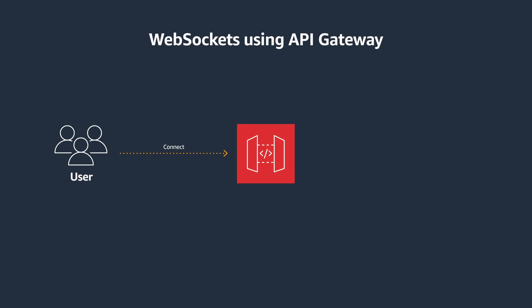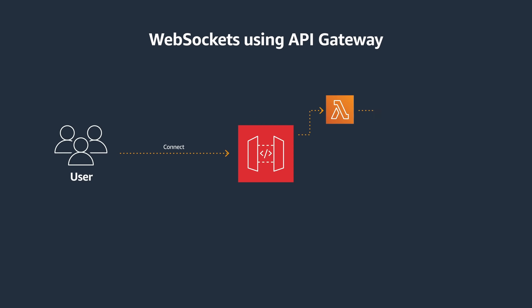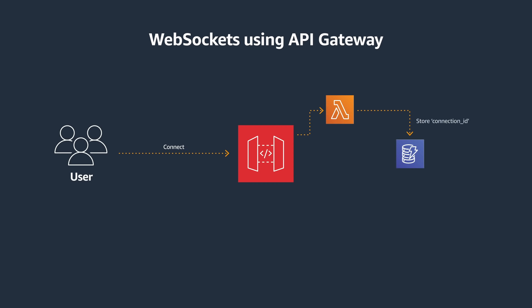The first is a connect route, used when a client first connects to your WebSocket API. You can define a Lambda proxy integration for this route, which gets triggered when the user connects to the WebSocket API. The Lambda function then stores the WebSocket connection ID in a DynamoDB table.